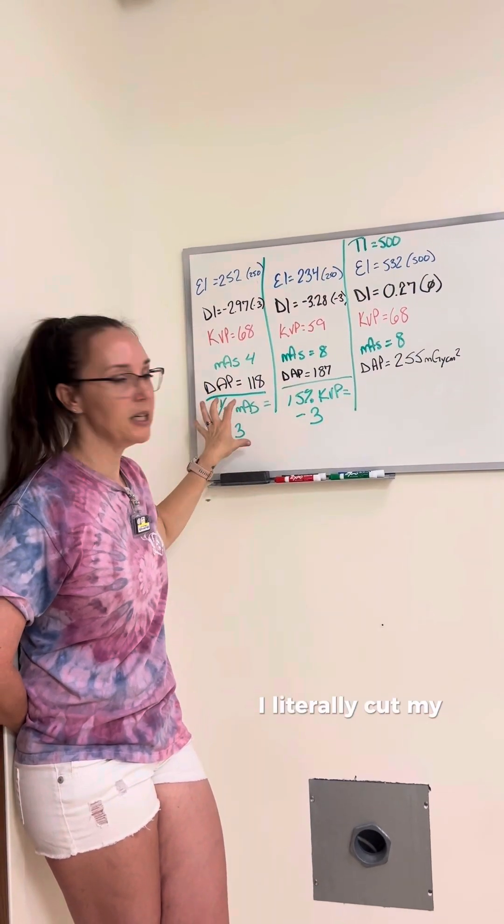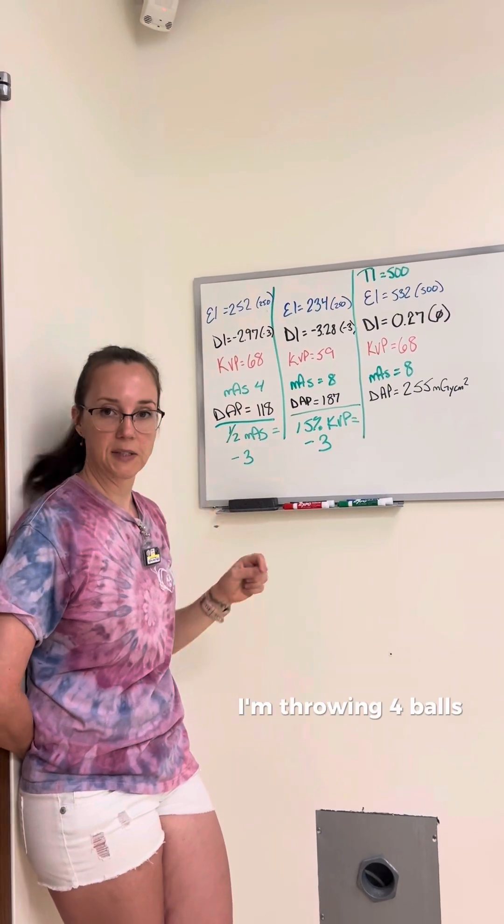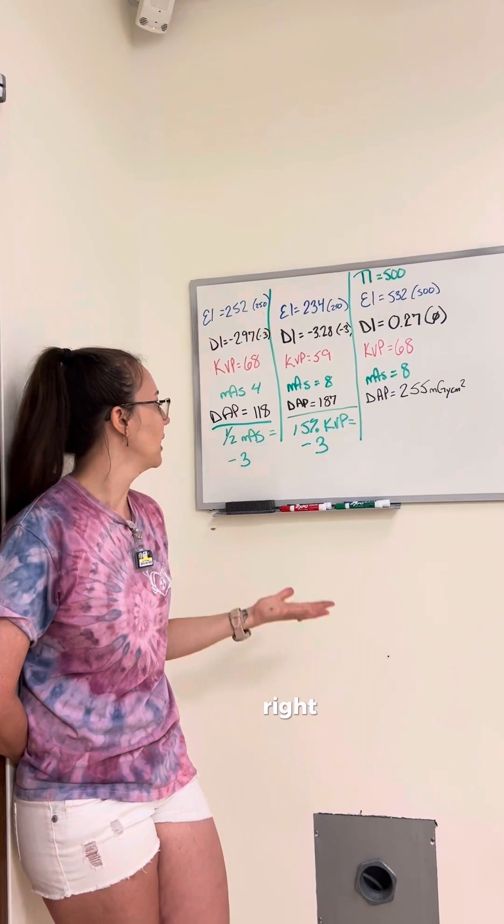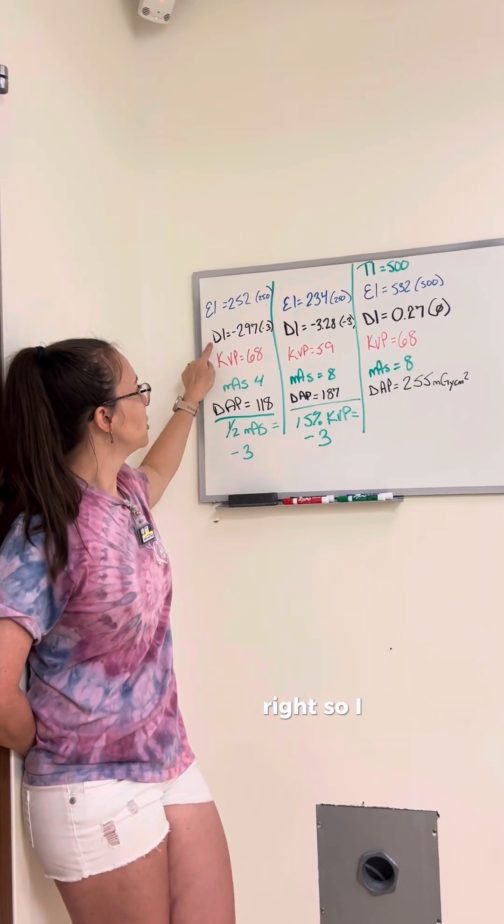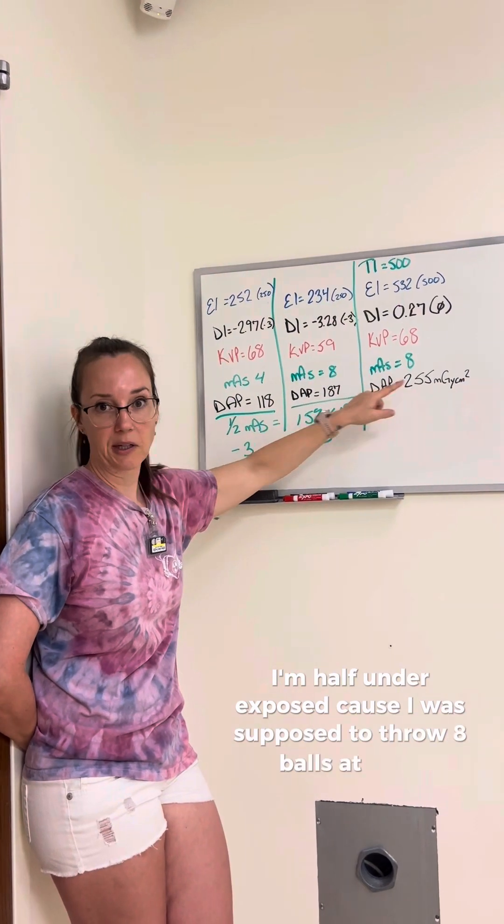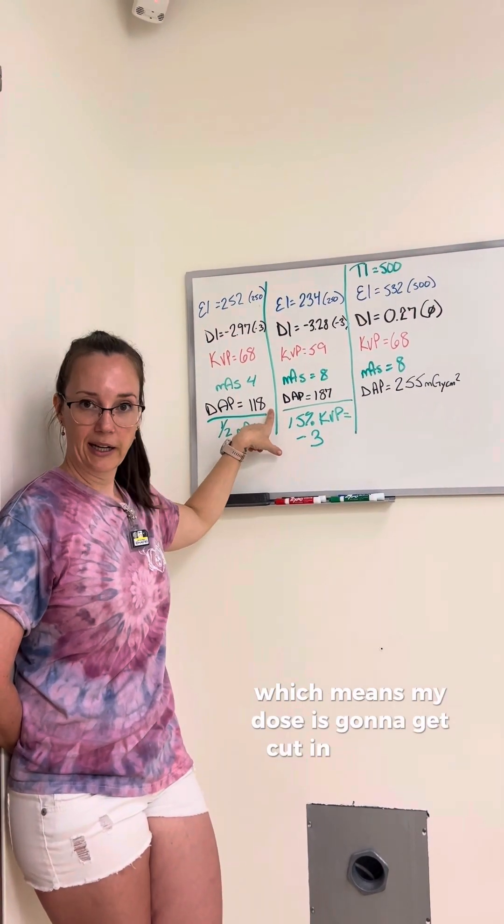I literally cut my dose in half because instead of throwing 8 balls at the person, I'm throwing 4 balls at the person. So I'm literally halving how much mass I'm throwing at the patient. So I shot a negative 3. I'm half underexposed because I was supposed to throw 8 balls at them, but I ended up throwing 4 balls at them, which means my dose is going to get cut in half.